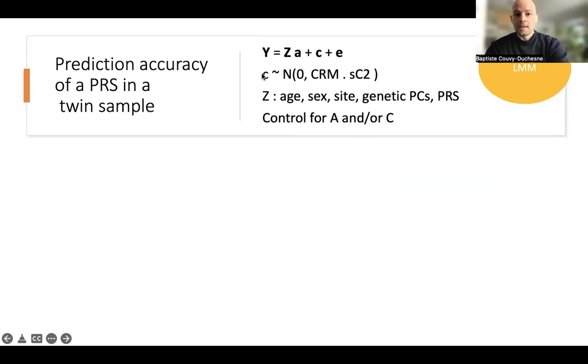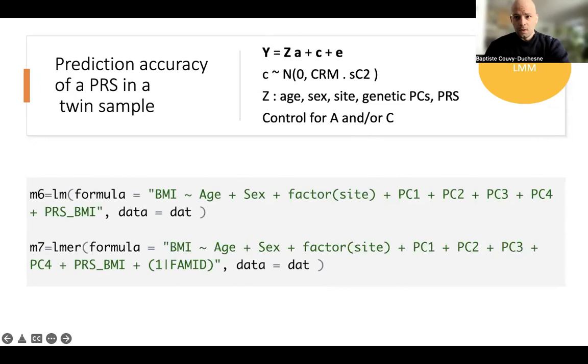So here, what we can do is actually model this population structure while estimating the prediction accuracy of the PRS. Z is now our matrix of fixed effects, which includes covariates and the PRS. And then we can fit a random effect. So which can be C, for example, which can be the shared environment effect. The idea behind this is that we do not want our prediction accuracy of the PRS to be contaminated by shared environment or additive genetics, so we can control for A and C in the model. In a very simple way of doing this, this is the example of the C control. We have a linear model here, where we have BMI as a function of our covariates and our PRS for BMI. And here, we further control in this mixed model for family ID fitted as a random effect, which is equivalent to fitting C, this shared environment random effect in the model.